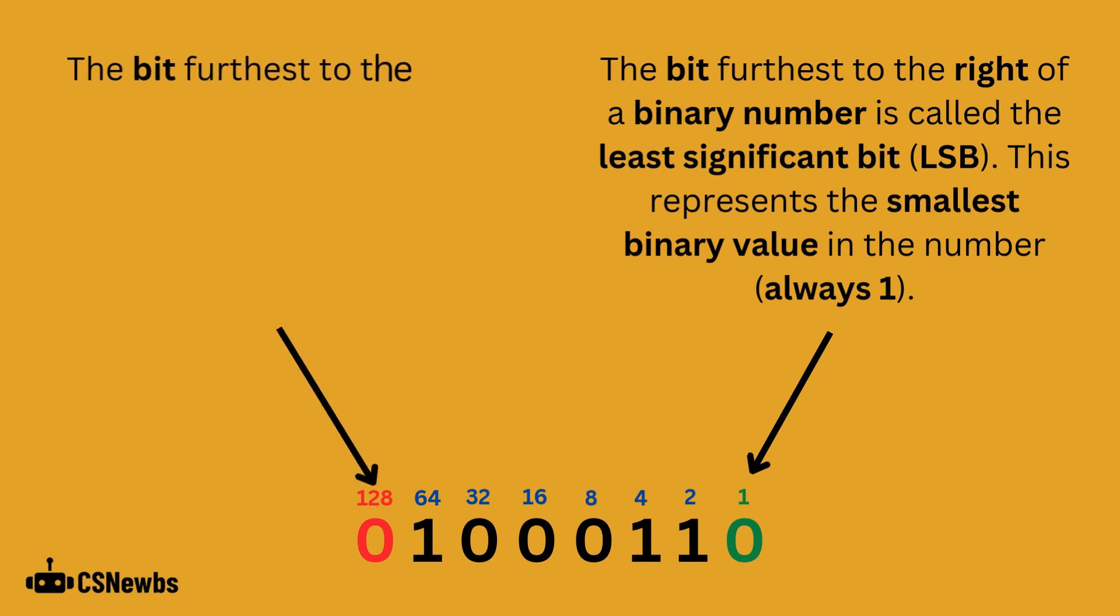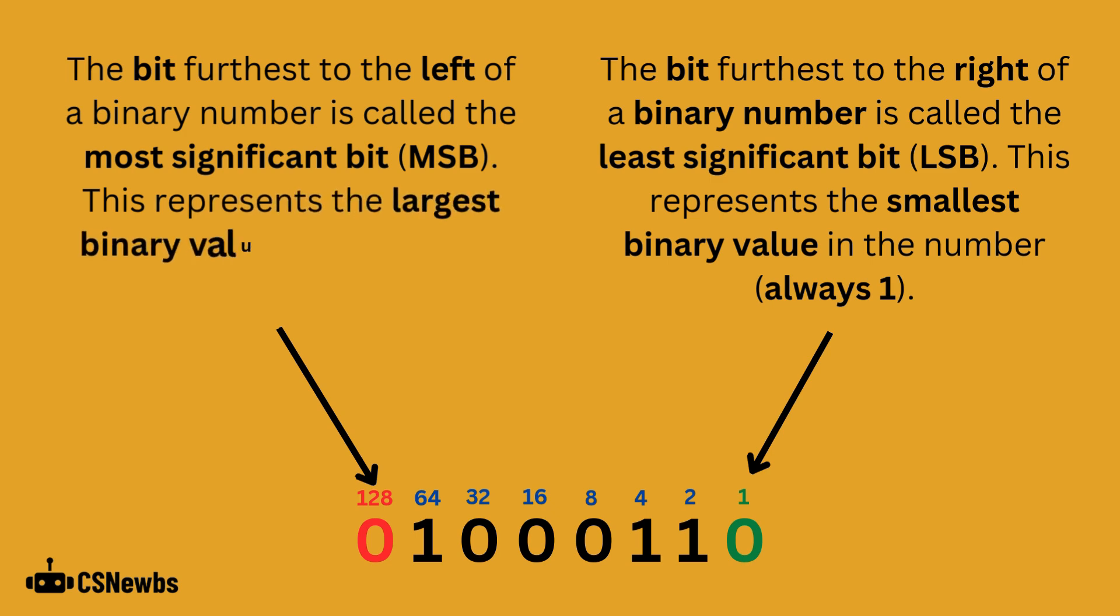The bit furthest to the left of a binary number is called the most significant bit. This represents the largest binary value in the number. With an 8-bit number, the most significant bit will represent 128.